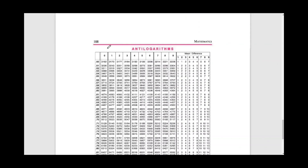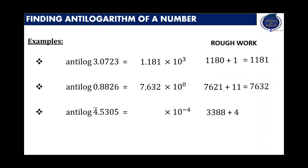Now let us consider the last number, which is 0.5305. The row containing 0.53 is underlined. Then 0 is read from the middle column. The number belonging to 0.53 and 0 is 3388. The mean difference for 5 is 4. Adding them, we get 3392. Hence the answer will be 3.392 into 10 raised to minus 4.